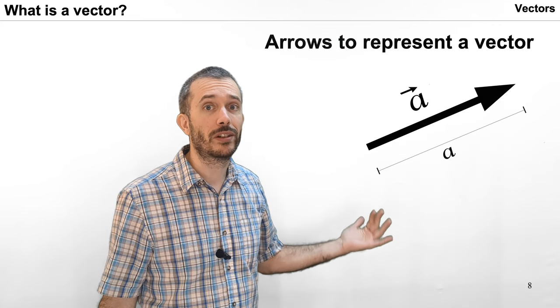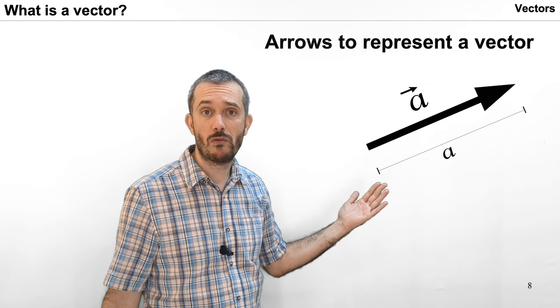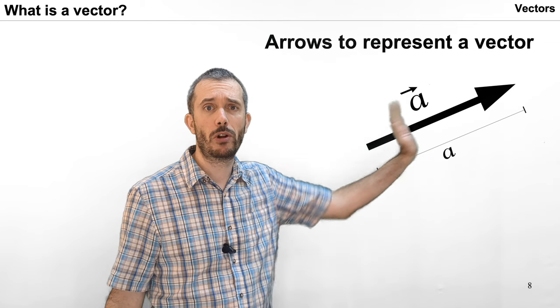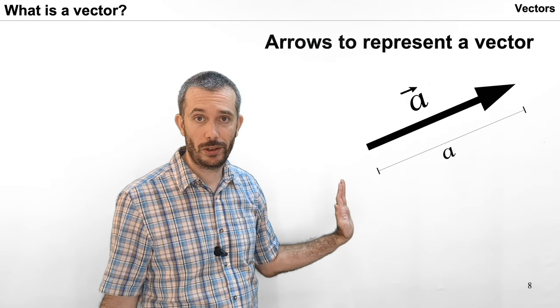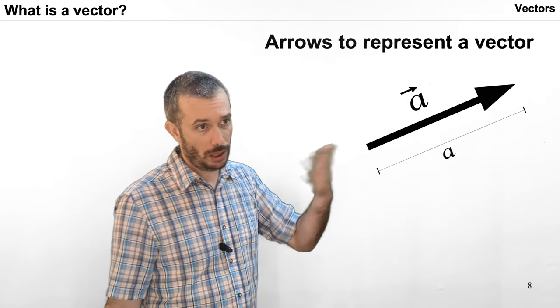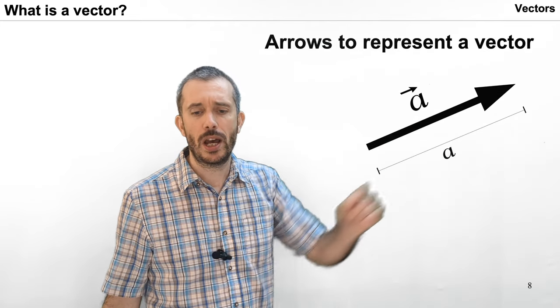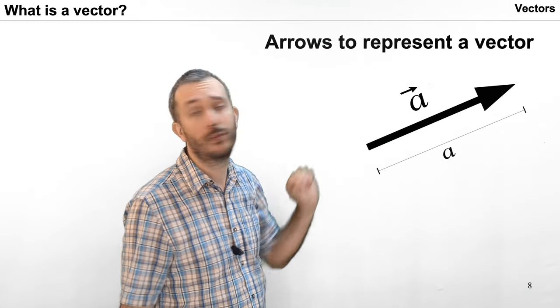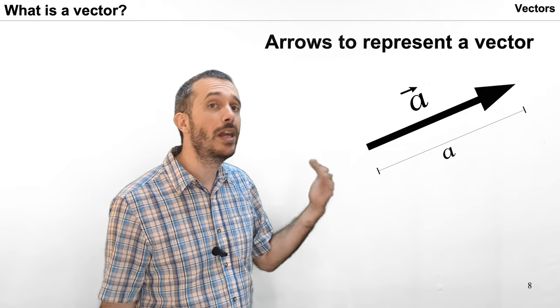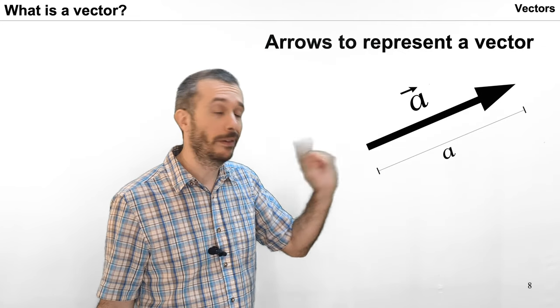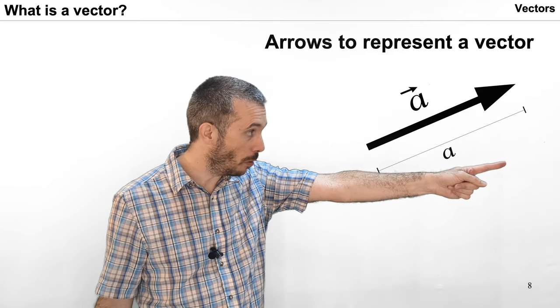To represent the vector we are often using arrows where the length of the arrow corresponds to the magnitude of the vector like 200 meters and the point of the arrow pointing into the direction in which the vector is going. 200 meters that way.